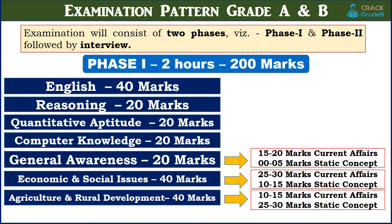Phase 1 examination is for 2 hours and contains 200 marks. Out of these 200 marks: English is for 40 marks, reasoning for 20 marks, quantitative aptitude for 20 marks, computer knowledge for 20 marks, general awareness for 20 marks, economic and social issues for 40 marks, and agriculture and rural development for 40 marks.